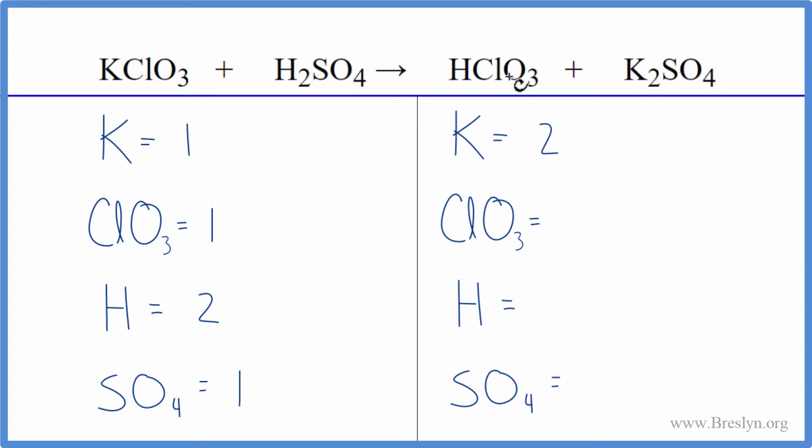On the product side, two of the potassiums, one chlorate, one hydrogen, and then one sulfate. So if we put a two in front of our KClO3, one times two, that'll give us two potassiums. Those are balanced.